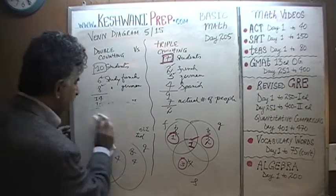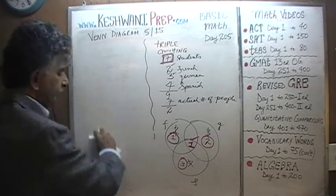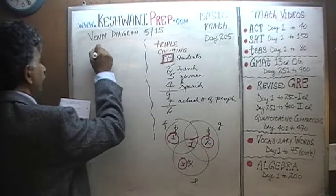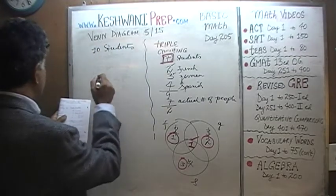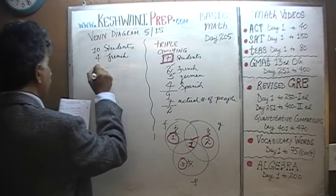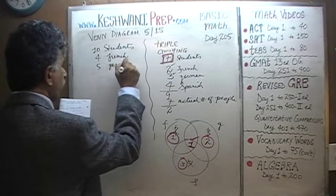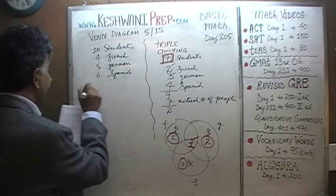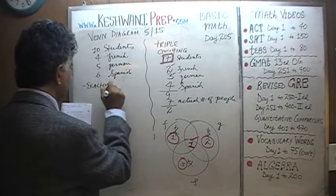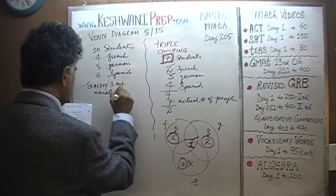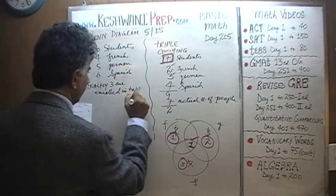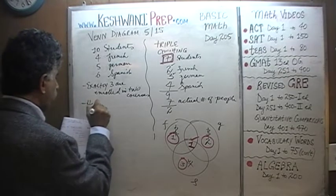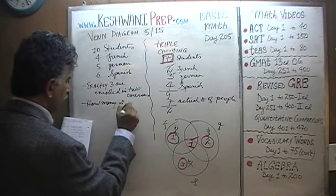Let's do today's problem. Today's problem also has to do with triple counting. We have 10 students. 4 of them study French, 5 of them study German, 6 of them study Spanish. We are also told — and this is a little bit more complicated — that exactly 3 are enrolled in 2 courses out of these 3 subjects. The question is: how many are enrolled in all 3?